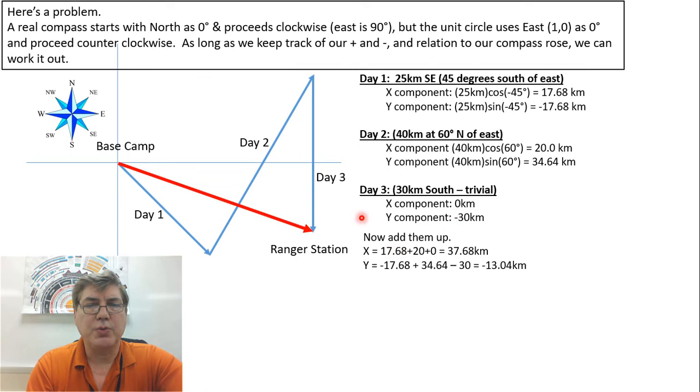In the y direction, we have negative 17.68, and then we go up 34.64, and then we go down 30, and we end up with minus 13.04. And that looks about right, too. If we look at our drawing, it looks like we've gone a whole lot to the east and considerably less to the south.